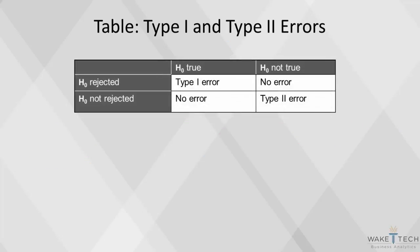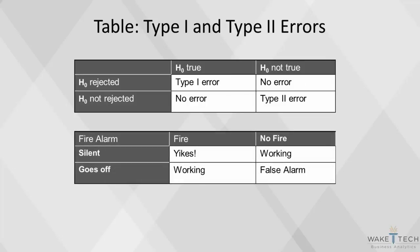Here's a table that summarizes the types of errors. Here's an example using a fire alarm. If a fire alarm is silent and there is no fire, our null hypothesis that it is working is correct. But what if the assumption is wrong? Then we have accepted the null hypothesis, but we actually have a fire. That's our type 1 error.